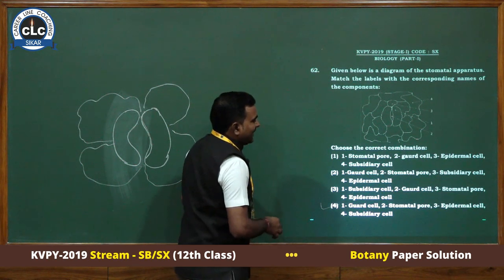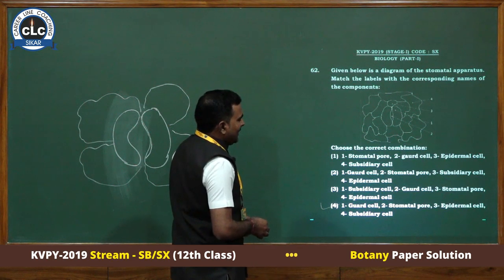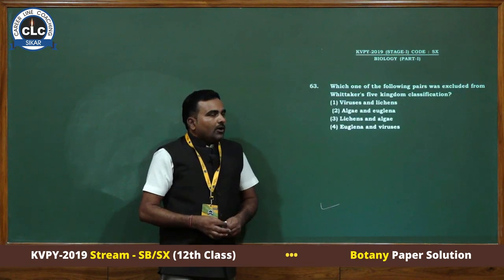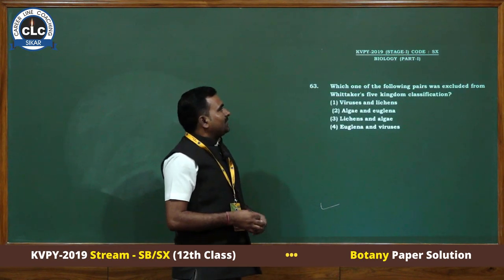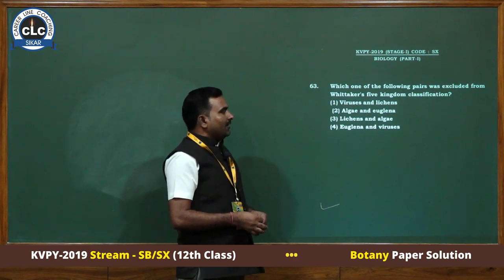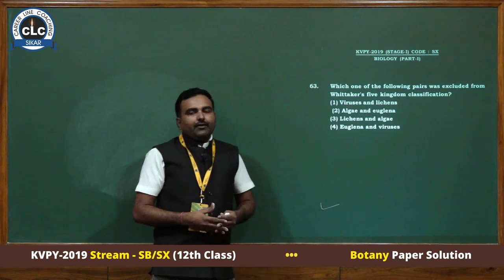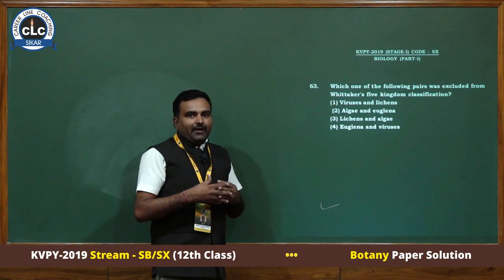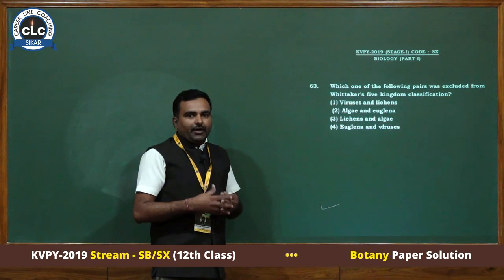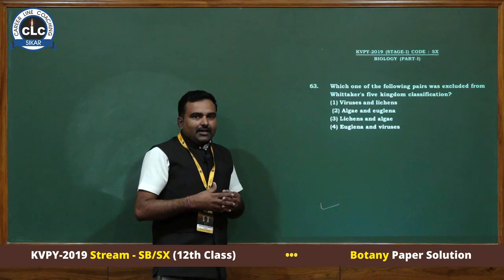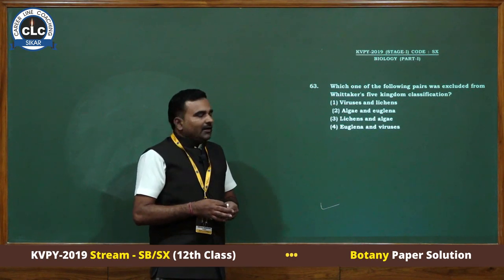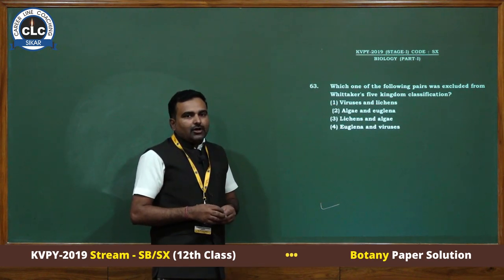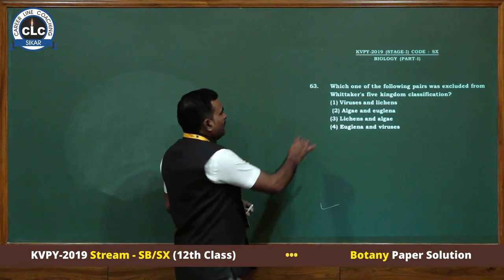One is guard cell, second is stomatal pore, third is epidermal cell, and four is subsidiary cell. Question number 63: which one of the following pairs was excluded from Whittaker's Five Kingdom classification? According to Whittaker's classification, all living organisms are classified into Five Kingdoms: Monera, Protista, Fungi, Plantae, Animalia. But Whittaker did not include Virus, Viroid, and Lichen. The answer is first.